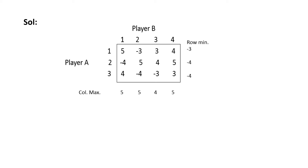Coming to the solution, first you have to find whether a saddle point exists in the given payoff matrix. For that, find the row minimum. For the first row, the minimum value is minus 3. For the second row, it is minus 4. For the third row, it is minus 4. Next, find the column maximum. For the first column, 5 is the maximum. For the second, also 5. For the third column, 4 is the maximum value. And for the fourth column, 5 is the maximum value.